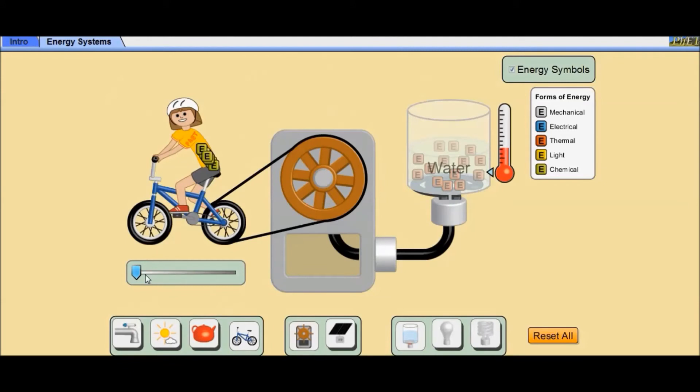Now let us see how the chemical energy is transferred into various forms of energy. The boy on a bicycle while pedaling converts the chemical energy in his body into mechanical energy, and a part of the energy is lost in the form of heat energy. This mechanical energy through pedaling is transferred to the turbine, which drives the generator to rotate. The generator produces electrical energy.